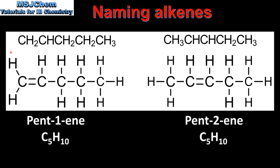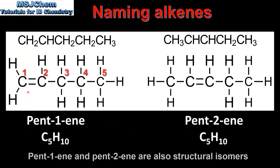Our next example has five carbon atoms in the longest carbon chain. On the left, the carbon to carbon double bond is between carbon number one and carbon number two, therefore it is named pent-1-ene. The example on the right has the carbon to carbon double bond between carbon number two and carbon number three, therefore it is named pent-2-ene. Note that pent-4-ene does not exist — instead it is named pent-2-ene.